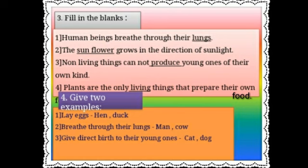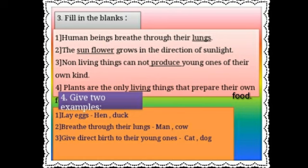Now the fifth question: answer the following. First one: what are living things? Give two examples. Answer: things which have life in them are called living things. For example, animals, plants, and human beings.